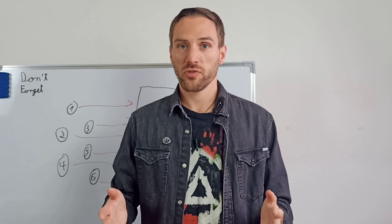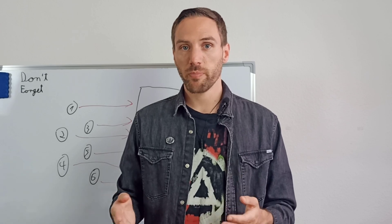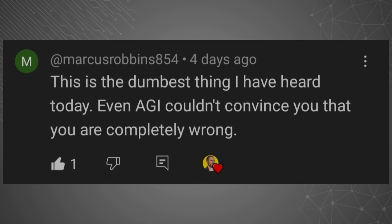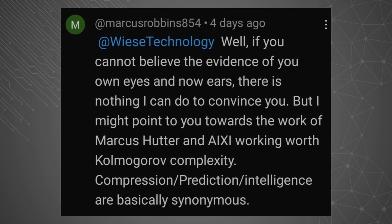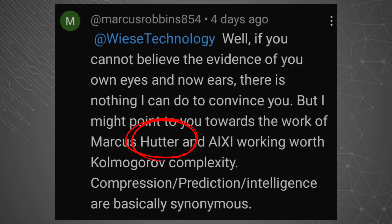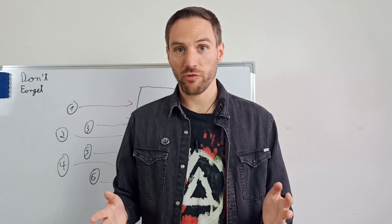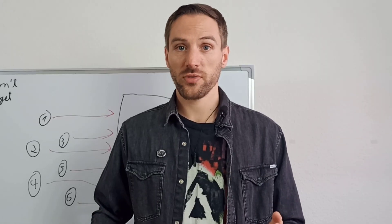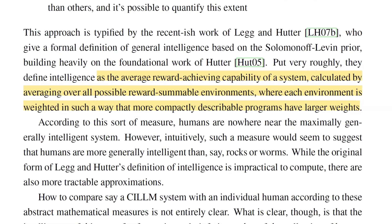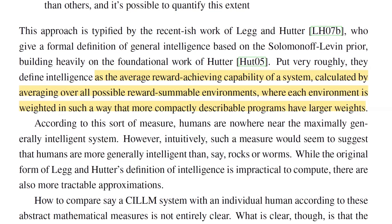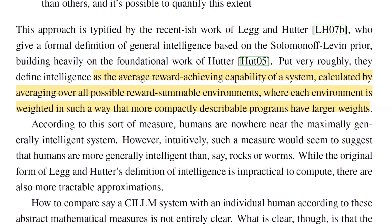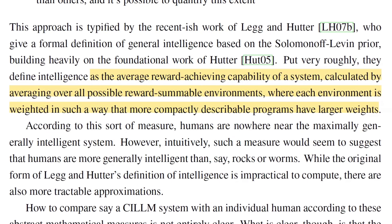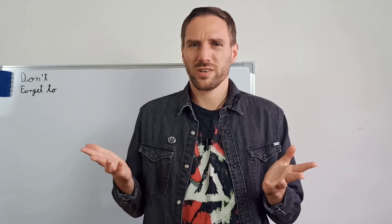Now let's look at a mathematical approach to characterizing general intelligence. Different from the other approaches, it is not based on human-like intelligence — it's based on the foundational work of Hutter. Intelligence is defined as the average reward-achieving capability of a system, calculated by averaging over all possible reward-summable environments, where each environment is weighted such that more compactly describable programs have larger weights. What does that mean?